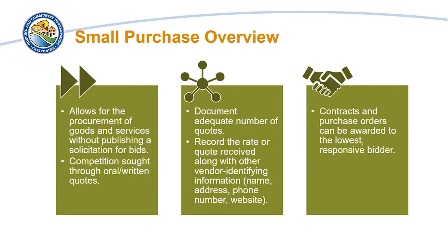Small purchases allow for the procurement of goods and services that does not require publishing a solicitation for bids. Rather, competition is sought through oral or written quotes. Grantees must document that an adequate number of quotes — typically three or more — were received, and record the rate or quote received along with other vendor identifying information such as name, address, phone number, and website. Contracts and purchase orders can be awarded to the lowest responsive bidder.